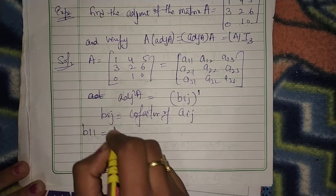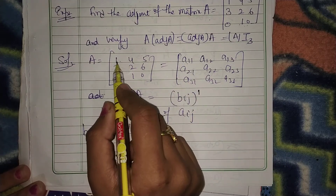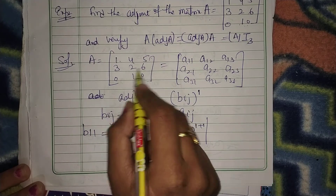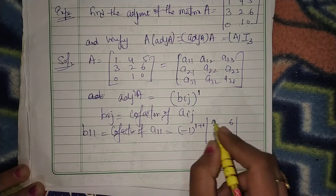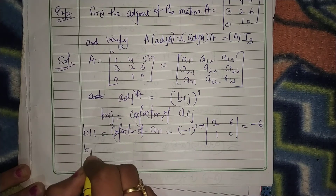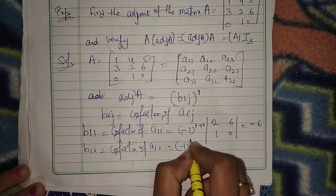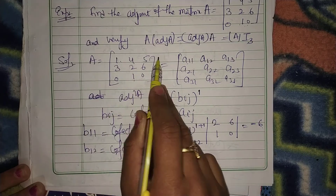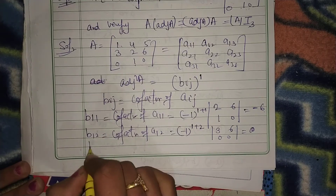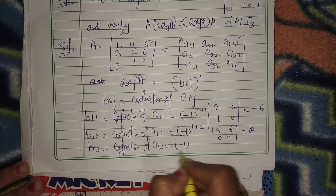What is B11? It is cofactor of A11, which is 1. Deleting row 1 and column 1, we get the 2x2 matrix [[2,6],[1,0]]. So B11 = (-1)^(1+1) times det([[2,6],[1,0]]) = 1 times (0-6) = -6. What is B12? It is (-1)^(1+2) times det([[3,6],[0,0]]) = -1 times 0 = 0.